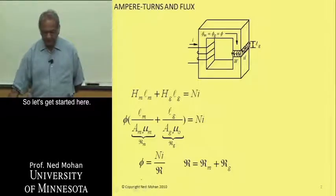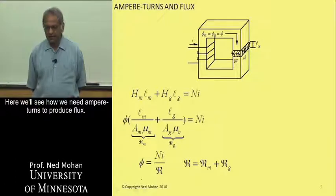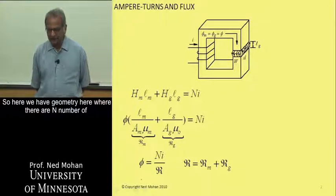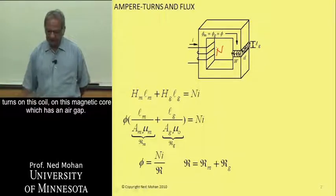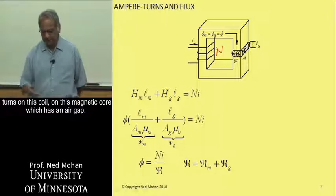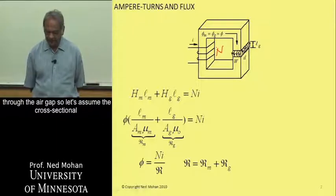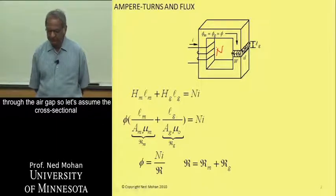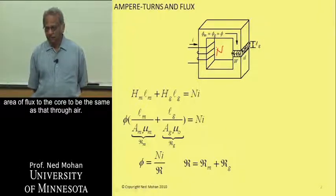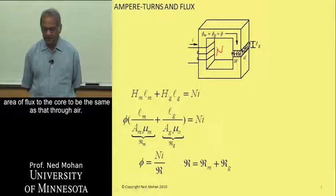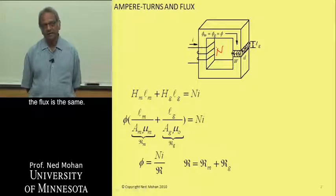Here we'll see how we need ampere-turns to produce flux. We have a geometry where there are N number of turns on this coil on this magnetic core, which has an air gap. For now, let's neglect the fringing of flux passing through the air gap, and assume the cross-sectional area of flux through the core to be the same as through air. Therefore, whether in the core or in air, the flux is the same.